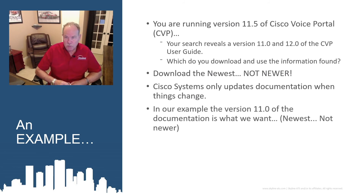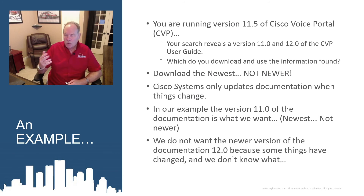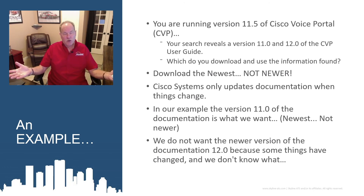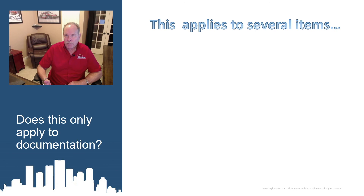So in our example, we want version 11 of the documents — the newest, not newer — so we're ensured we have good information. If we made a mistake and only followed the first part 'download the newest' and forgot 'not newer,' we would download version 12. Now all bets are off — you don't know what you're getting, you don't know what has changed. Does this 'newest, not newer' analogy apply only to documentation?